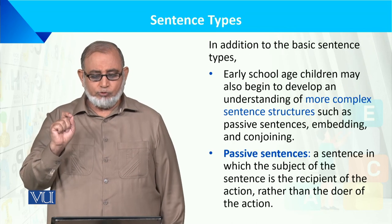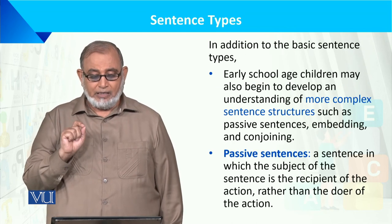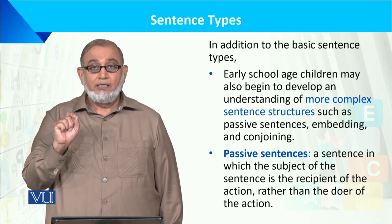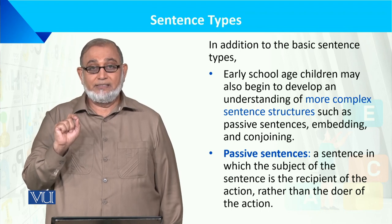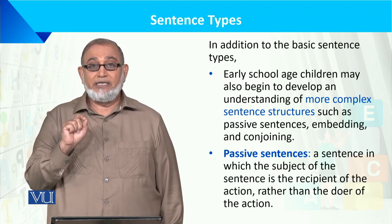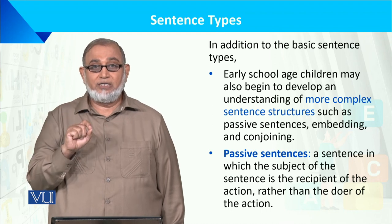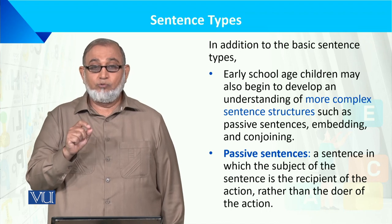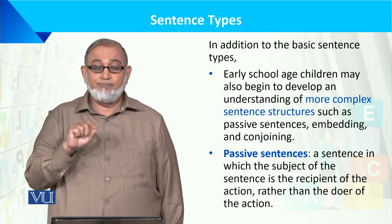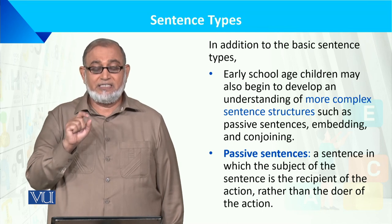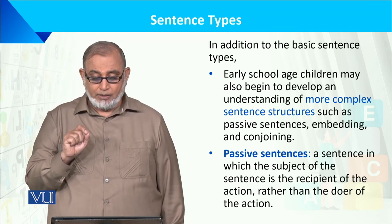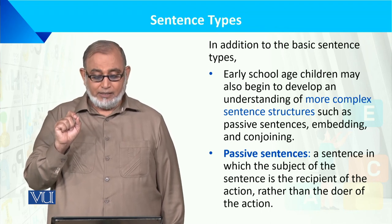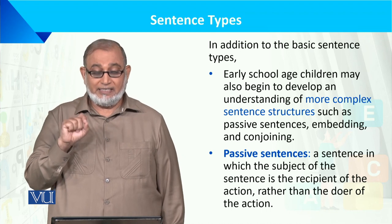In addition to the basic sentence types, early school-age children may also begin to develop an understanding of more complex sentences. As their age increases and cognitive skills develop, they develop syntactic rules and move from simple to complex sentences — including passive sentences, then embedding or conjoining sentences.